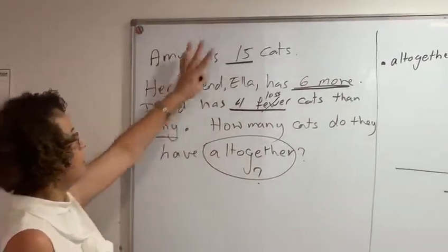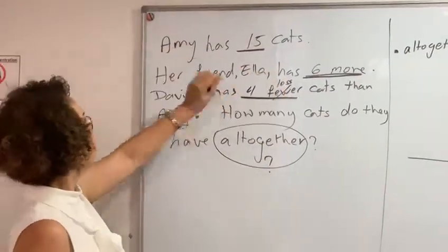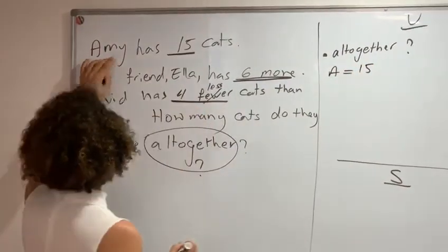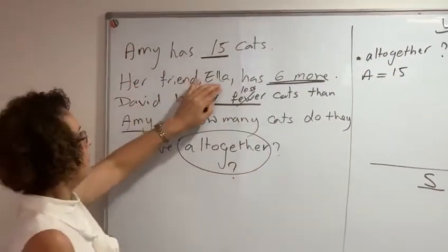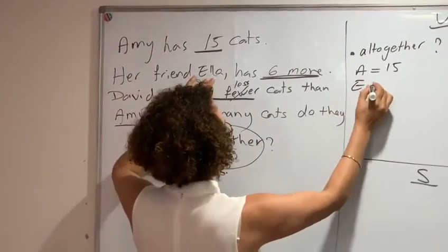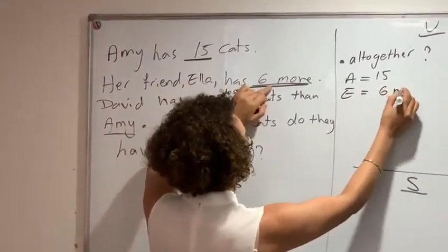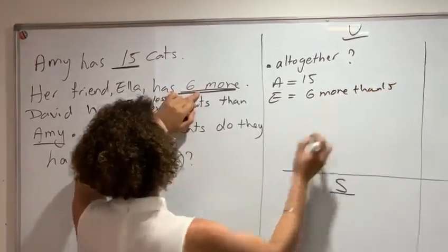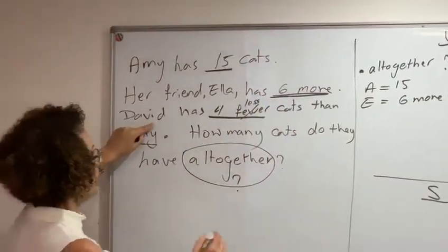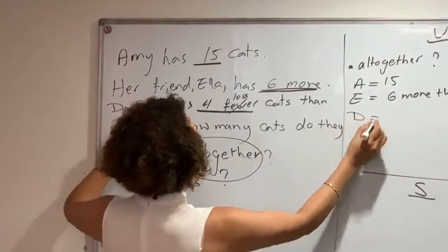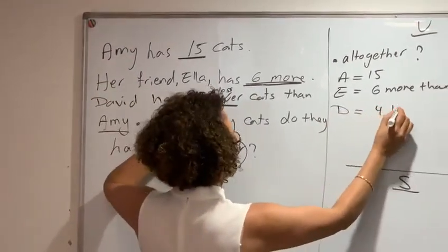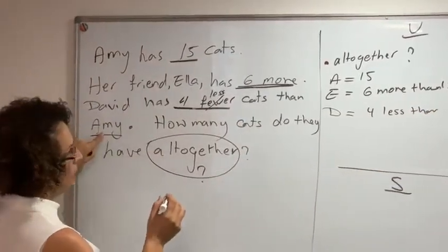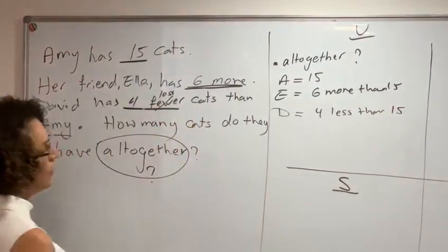And then summarize this information in a dot point format. So Amy has 15. Her friend Ella, so Ella has 6 more than 15. Then of course David has 4 less than Amy, which is 15. Okay.